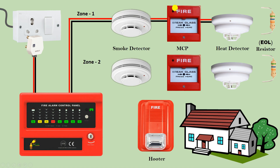In zone 1, connect as many detectors as you need in this looping manner. At the last detector, bring both wires and do the connection with the EOL resistor.